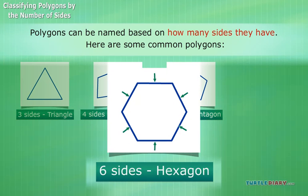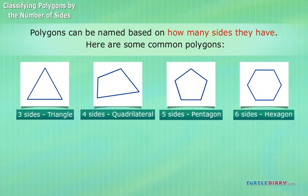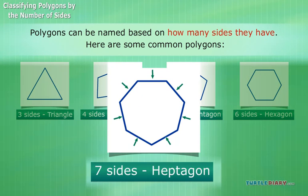Six sides: hexagon. Seven sides: heptagon.